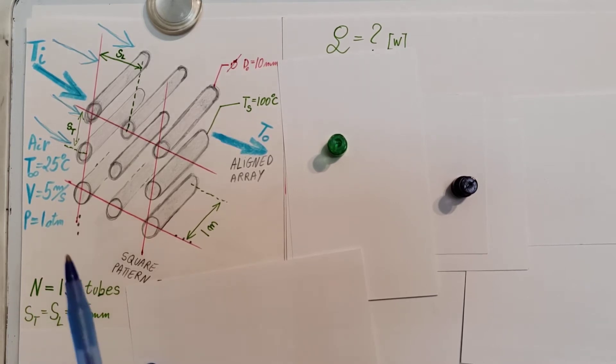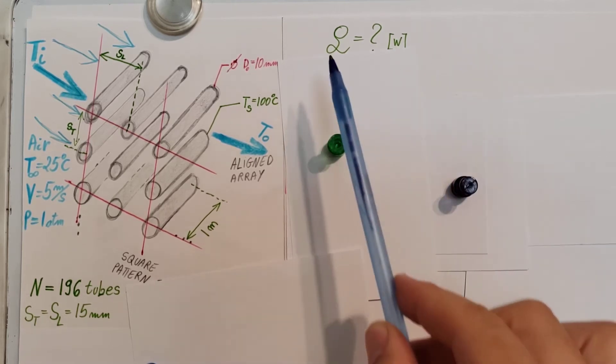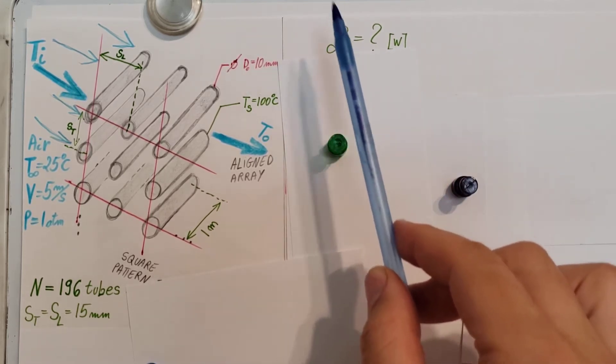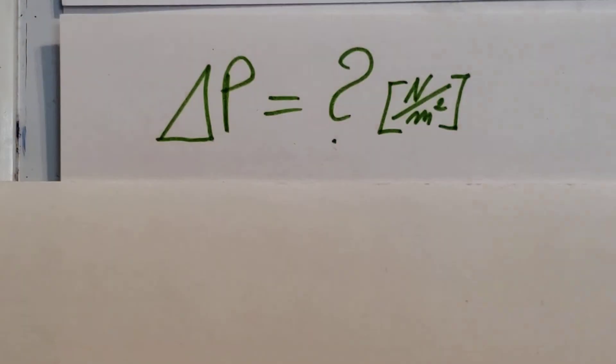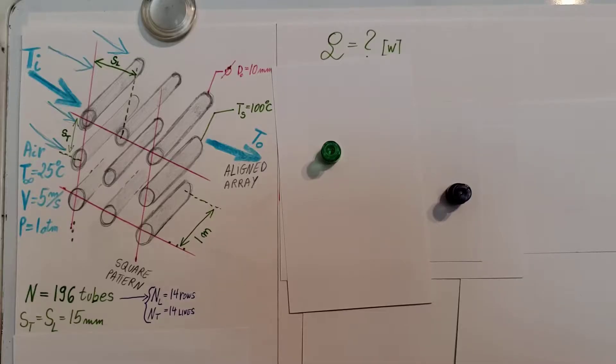They want us to find the total heat transfer rate to the air and the pressure drop associated with the airflow through the system. To start, I just calculated these two. Since they said it's a square pattern, we know that the number of rows and number of lines is going to be equal. We can calculate these two right off the bat. Let's get started with our rate of heat transfer.